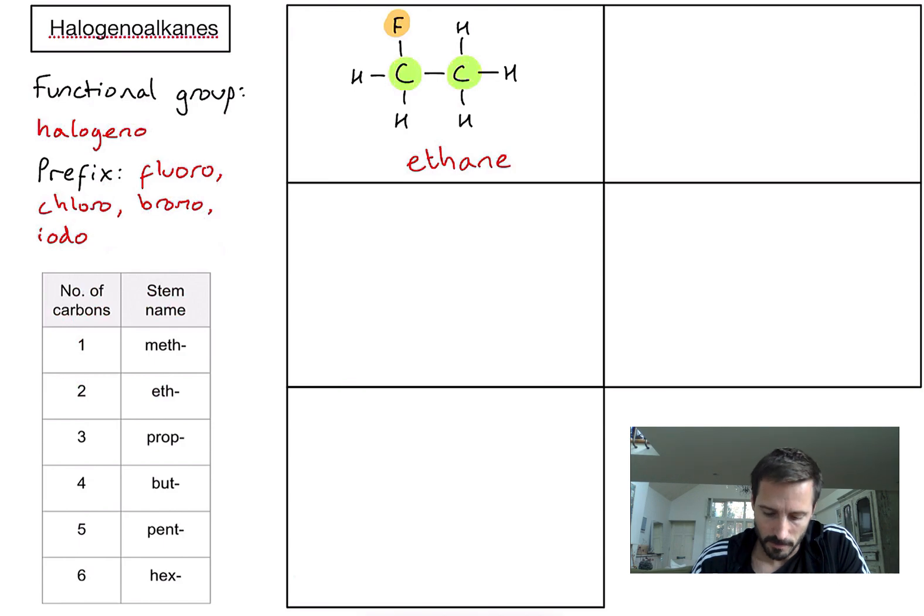For the fluorine part, if I number my carbons one and two, the fluorine is on the first carbon, so I could call it 1-fluoroethane. However, if I switched the fluorine to the other side, I would number the carbons the other way around. It's still on the first carbon, so we don't actually need that number in the name.